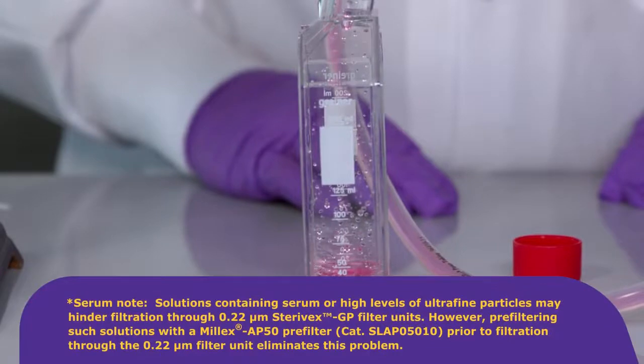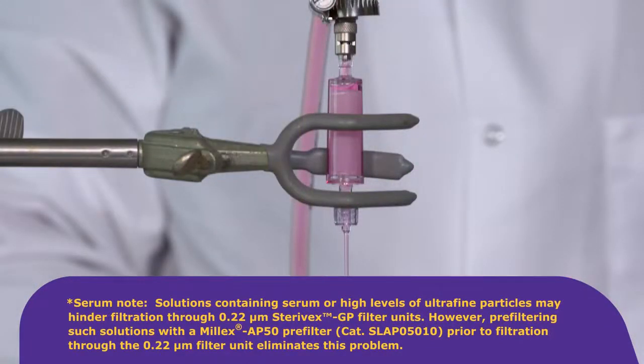Serum note. Solutions containing serum or high levels of ultrafine particles may hinder filtration through a 0.22 micron Sterivex GP filter units. However, pre-filtering such solutions with a Millex AP50 pre-filter prior to filtration through the 0.22 micron filter unit eliminates this problem.